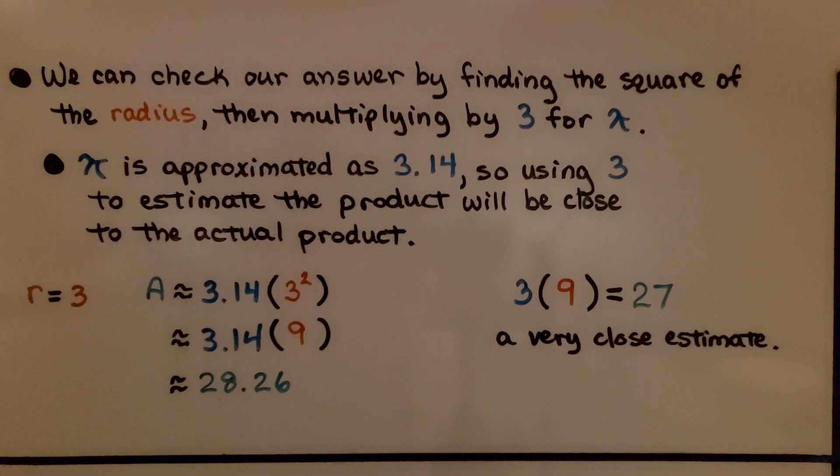We can check our answer by finding the square of the radius, then multiplying by 3 for pi. And pi is approximated as 3.14, so using 3 to estimate the product will be close to the actual product. We got 28.26, and if we just did the 9 times 3, we'd get 27. That's a very close estimate. So we know that this is reasonable because it's very close to our estimate.